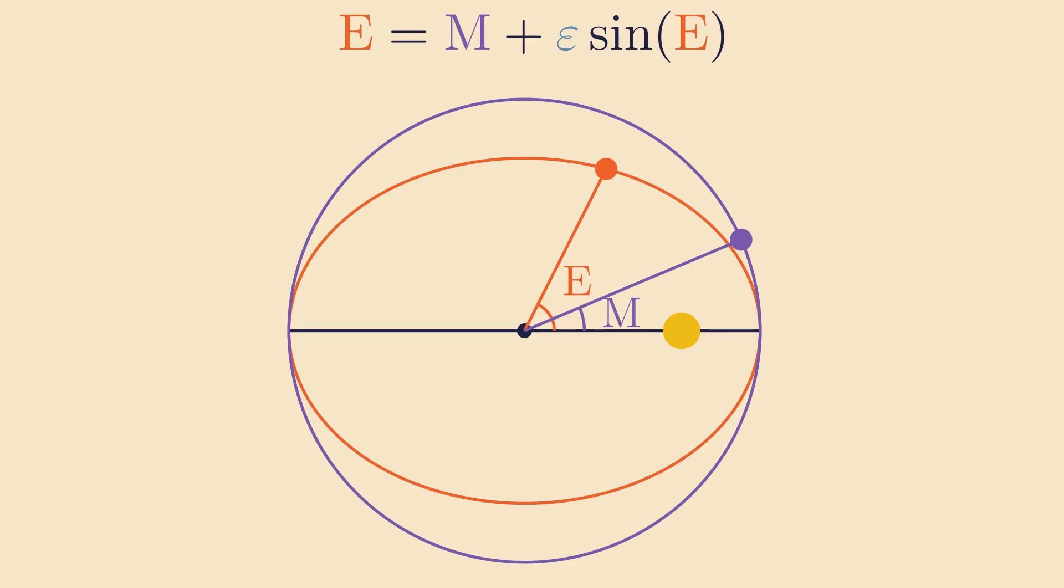The small e in this equation is the eccentricity of the circle, which is simply given by the length of the minor, or the shorter axis, over the length of the longer, or the major axis. Through some basic geometry, it can be proven that these quantities are related by Kepler's equation.